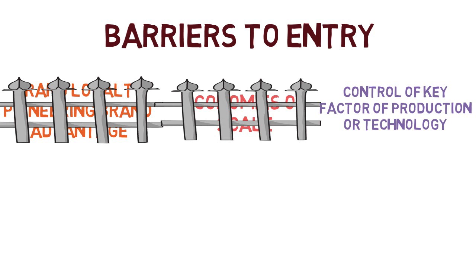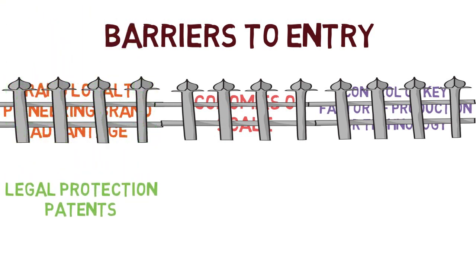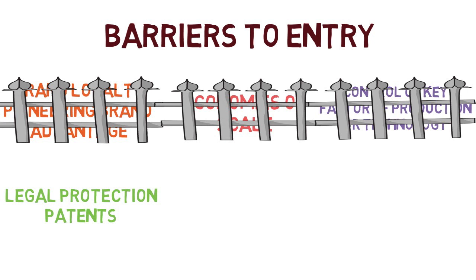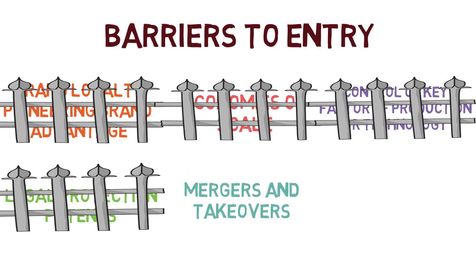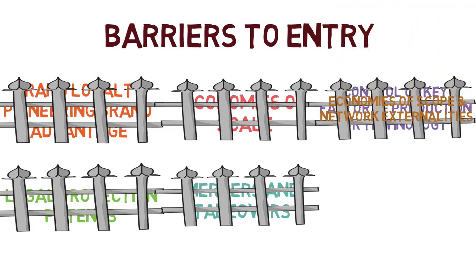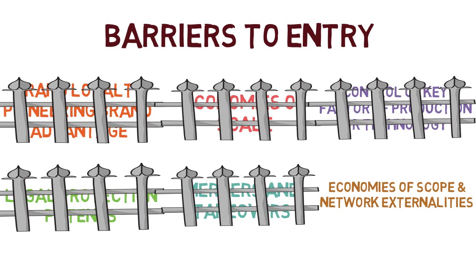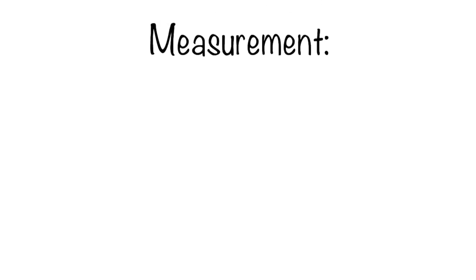If you own a key factor such as lithium and the ability to produce better batteries in electric vehicles, you can obstruct competitors from entering. Legal protection also acts as a barrier — in pharmaceutical markets, for example, a patent on a new drug means firms cannot enter the market. Companies can also merge with others, which happens quite a bit in pharmaceutical and digital companies, keeping out competitors. Finally, economies of scope and network externalities — where utility increases with more users, such as Facebook — act as large barriers to entry, increasing market power.